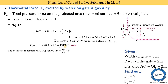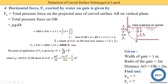Now we find where this Fx force is acting — the depth H-star (center of pressure). The equation is H-star = (IG / (A × H-bar)) + H-bar. We already know area A = 2 m² and H-bar = 2.5 m. IG is the moment of inertia of OB about its centroid. Viewing OB as a rectangle with breadth B = 1 m and depth D = 2 m, the formula gives IG = (B × D³) / 12 = (1 × 2³) / 12 = 8/12 = 2/3 m⁴.